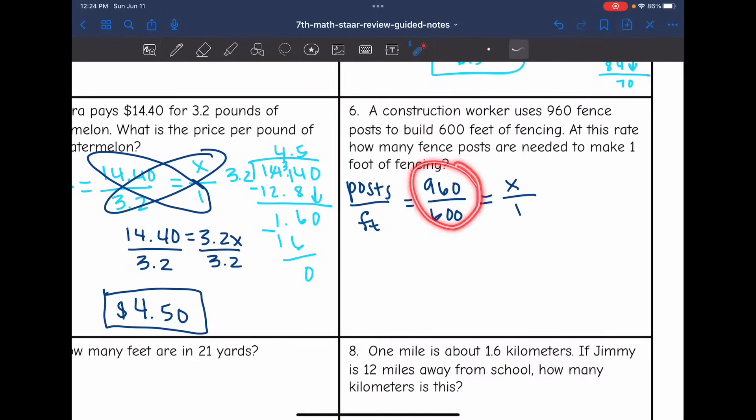So before I solve this, 960 over 600, those are both divisible by 30. I'm going to simplify this as much as I can first. And 960 divided by 30 is 32. And 600 divided by 30 is 20. And then those both can still be simplified more because those are both divisible by 4. So 32 divided by 4 is 8. 20 divided by 4 is 5. So I get 8 fifths equals x over 1.